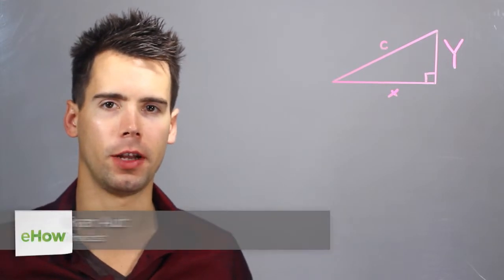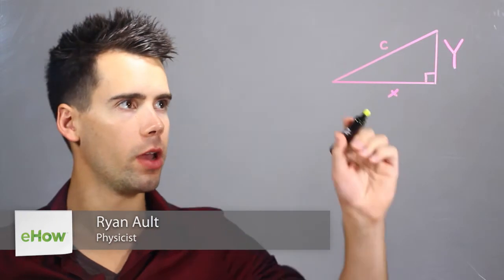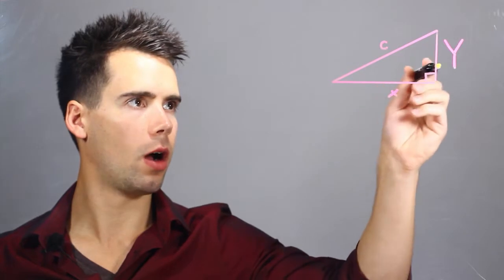Hi, I'm Rhino, I'm a physicist, and this is how to solve for y in a right triangle. Here we have a right triangle drawn, and we see that it has three sides: x, y, and c.